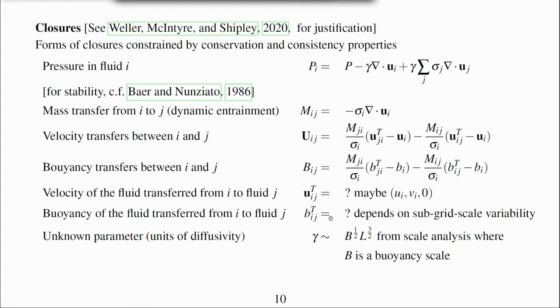The buoyancy of the fluid transferred will depend on subgrid scale variability. We will present results using b_ij transferred is equal to bᵢ, which assumes that the buoyancy of the fluid transferred is equal to the buoyancy of the giving fluid.